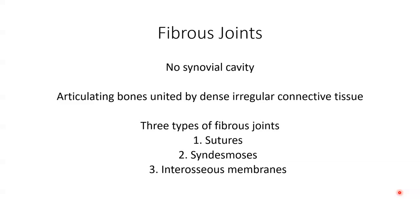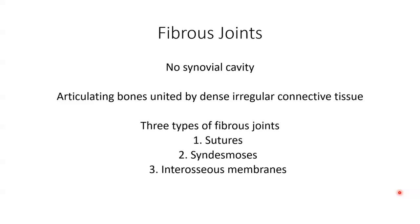There are three different types of fibrous joints: sutures, syndesmosis, and interosseous membranes. A suture is a fibrous joint composed of a thin layer of dense irregular connective tissue. Sutures only occur between the bones of the skull. The irregular interlocking edges of a suture give them added strength and decrease their chance of fracturing. In older individuals, sutures are immovable, or synarthrosis.